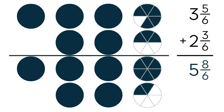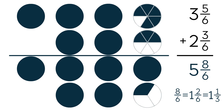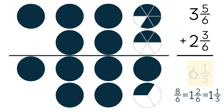This isn't our final answer because 8 over 6 is an improper fraction — it is greater than 1 whole. 8 over 6 can be written as 1 and 2 sixths, which is the same as 1 and 1 third. So instead of 8 over 6 we write 1 and 1 third. Now we group the wholes together and rename the sum. Our final answer is 6 and 1 third.